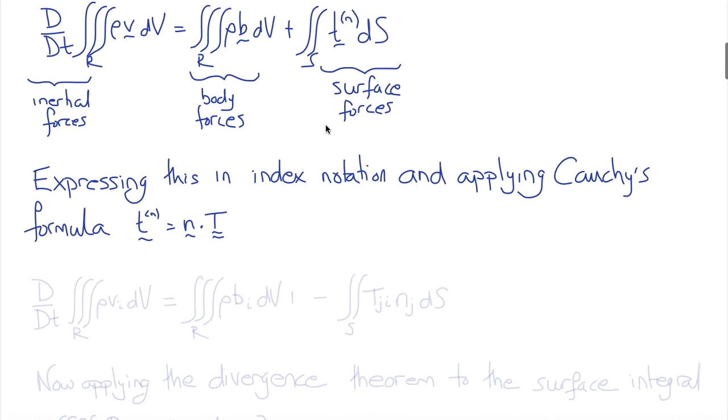We'll obtain the material derivative of the triple integral over R of rho V_i with respect to volume, equals the triple integral over the region R of rho B_i with respect to volume, minus the surface integral over T_ji N_j, which is the surface tractions in Cauchy's formula.